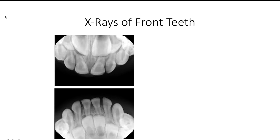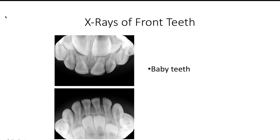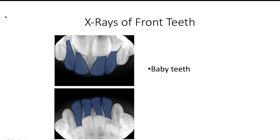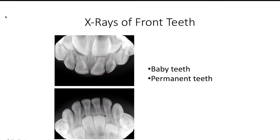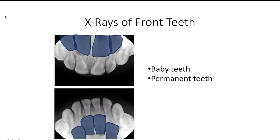Here is what these front teeth x-rays look like. You can see the top jaw and the bottom jaw, you can see the baby teeth here, and you can see the permanent teeth that are developing in the bone beneath the baby teeth here.